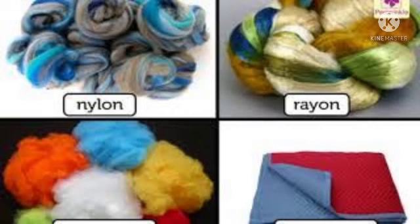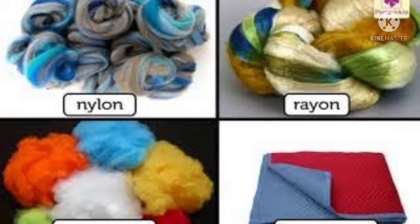First, let's see how viscose rayon is made. Cellulose obtained from plants is dissolved in a mixture of sodium hydroxide — also called caustic soda — and carbon disulfide. This forms a viscose liquid, which is a thick liquid that cannot flow freely. This viscose liquid is then forced through a spinneret with very small holes into an acid bath, and through this process viscose rayon is obtained.